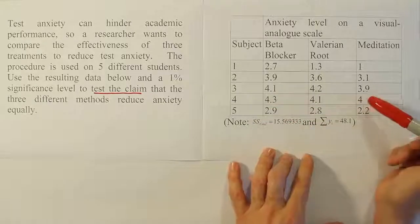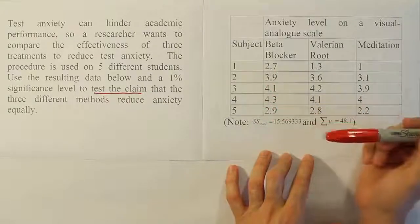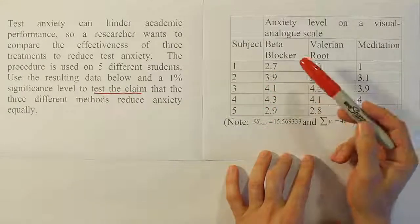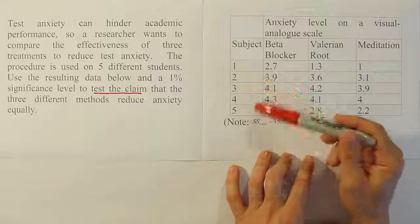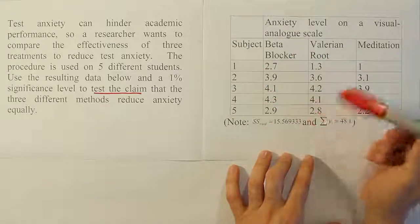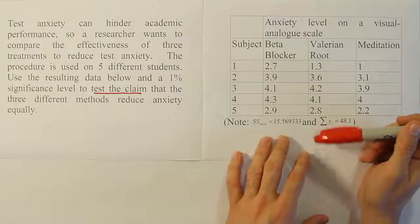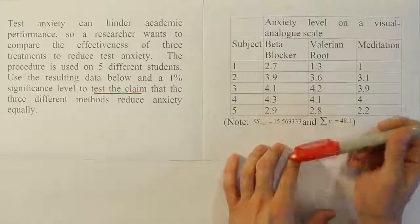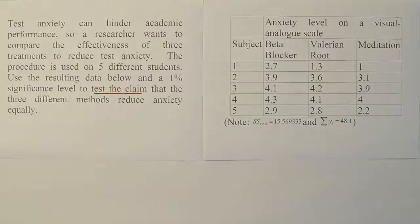Because it's a randomized block design, we're going to assume there's no interaction effect. That means we work out the problem by computing the sum of squares for treatment, the sum of squares for block, and filling in our ANOVA table. Our first step, as always, is to express H₀ and Hₐ.